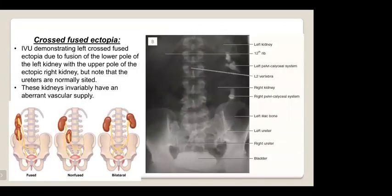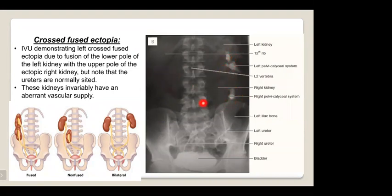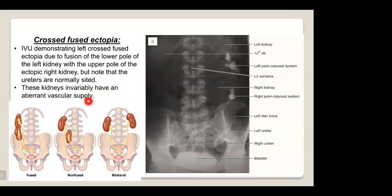Cross-fused ectopia is a congenital anomaly where one kidney has crossed to the other side and may be fused with the opposite, normally sited kidney. On IVU, the right kidney can be seen crossed to the left side and fused with the left one. Note that the ureters are still normally sited. These kidneys invariably have an aberrant vascular supply.